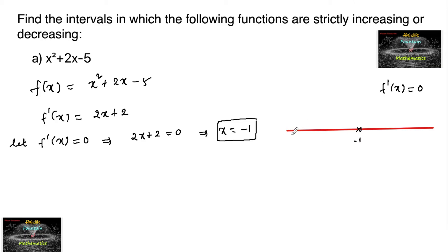x equals minus 1 will divide the interval minus infinity to plus infinity into two parts. By wavy curve, we can consider that it's positive in the right side and negative in the left side.